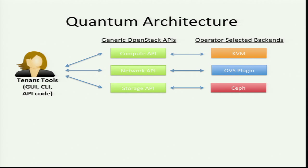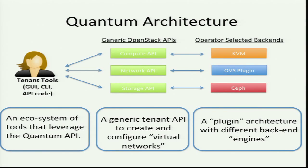Quantum is an independent service within OpenStack, just like Nova or Cinder. The basic model is that you have a generic tenant API — spoken to directly with code, via CLI, or via GUI like Horizon — which hits generic logical APIs that aren't about how resources are physically instantiated, just how they're logically consumed. The cloud operator can select different back-ends, just like you'd choose KVM or Xen for compute, or Ceph for storage.